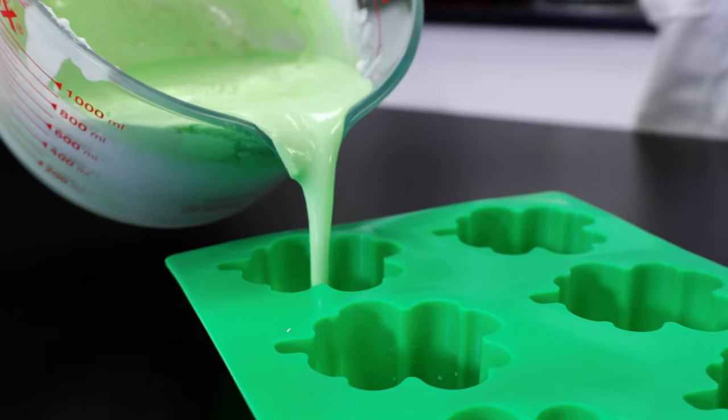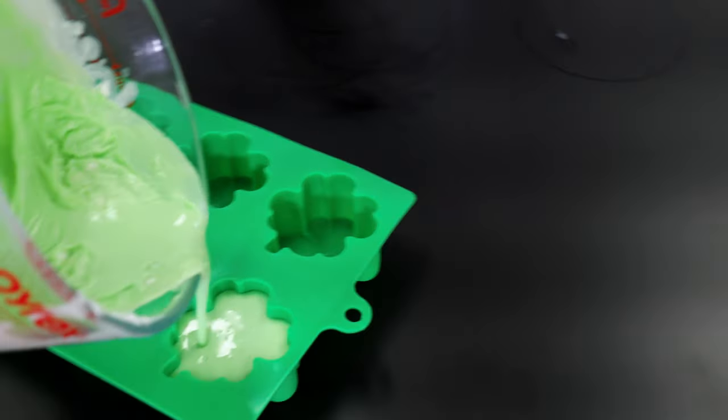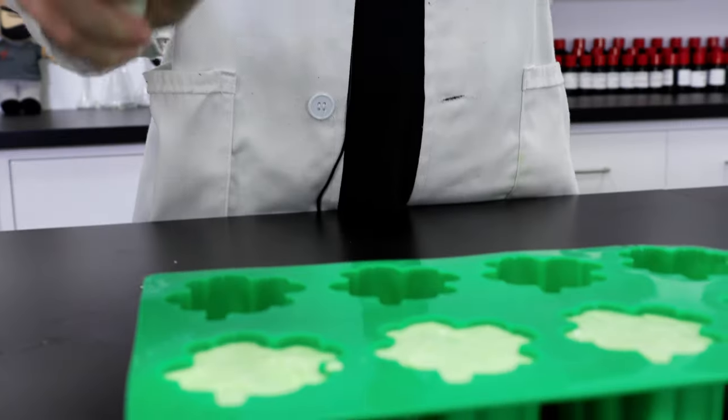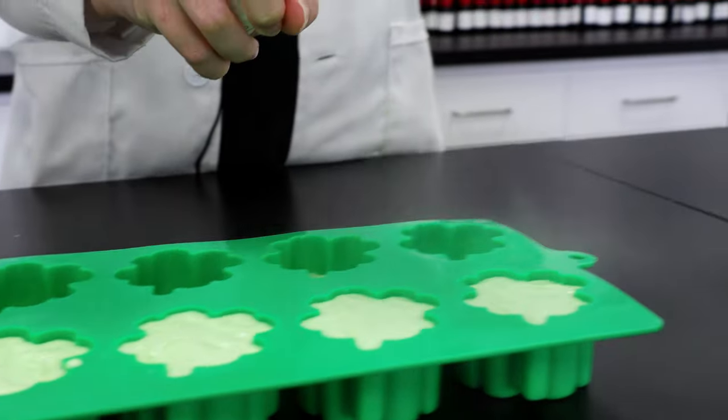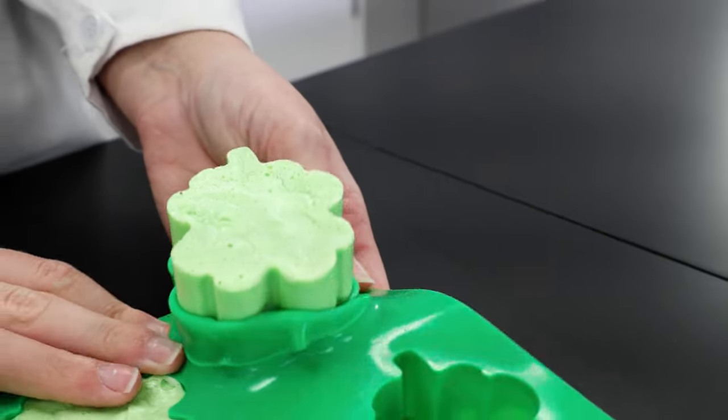I'm using some super cute clover molds to match the theme of the bars. When you fill the molds, give everything a spritz with some isopropyl alcohol to get rid of any bubbles. My bars are fully hardened now, and after a couple of hours they can be removed from the molds.